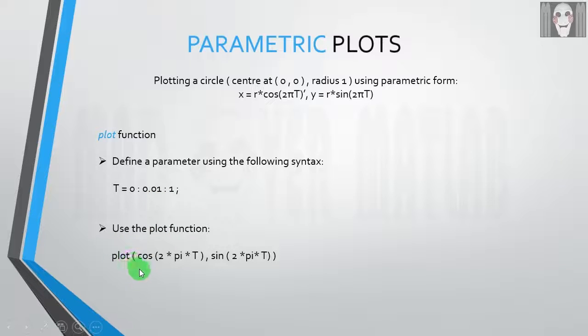After that, we have to use the plot function. The first argument will be the x coordinate, so the x coordinate is r*cos(2πt). In this case, the radius is 1, so r becomes 1. The y coordinate is r*sin(2πt).